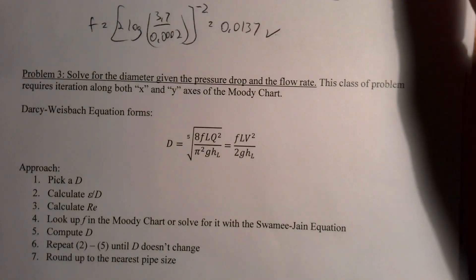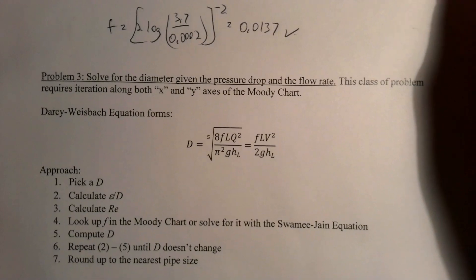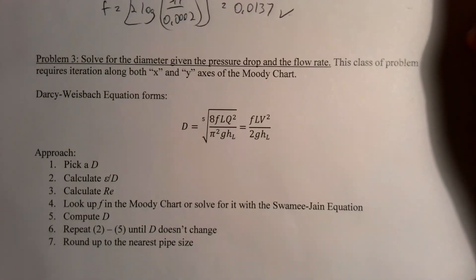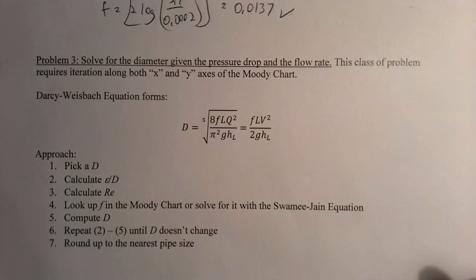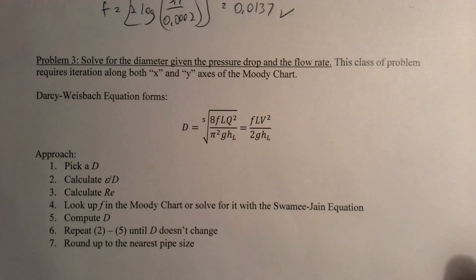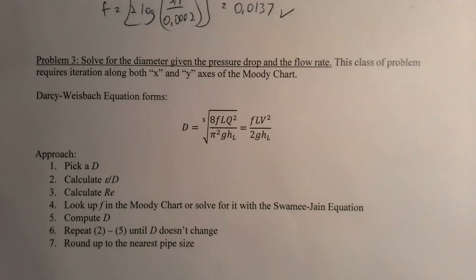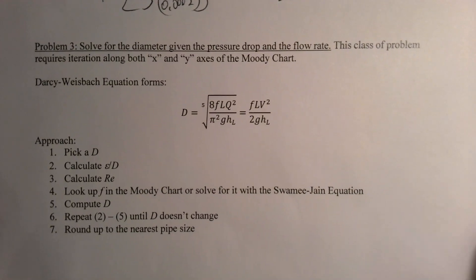We're continuing to talk about how to compute engineering design parameters for pipes in fluid flow problems. We've made a couple of other videos looking at how to compute the head loss in a pipe — that is, the loss associated with friction and energy — or how to compute the flow rate if you know the head loss and the diameter. In this video, I want to show how to compute the diameter required for a specific flow rate given the amount of head loss available.